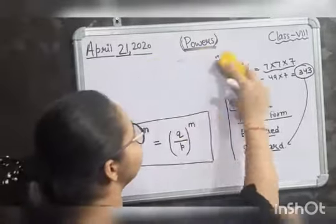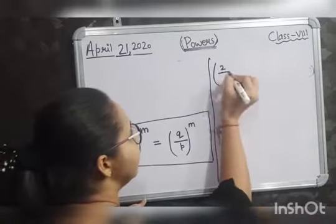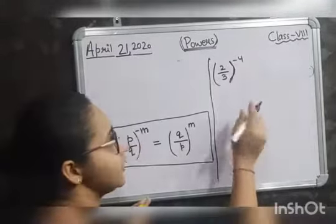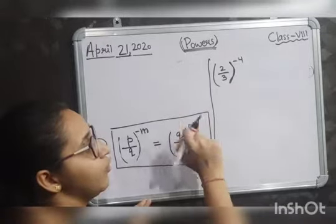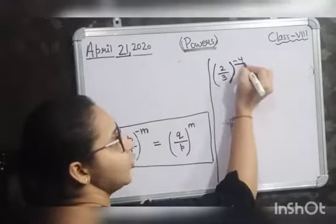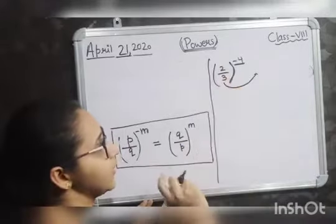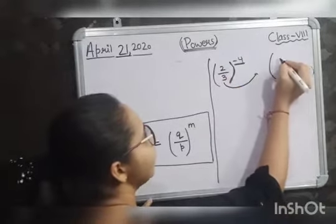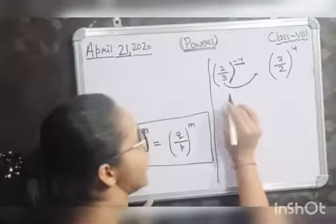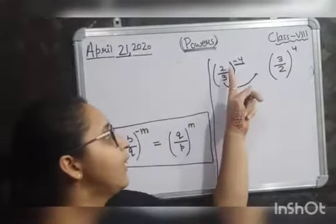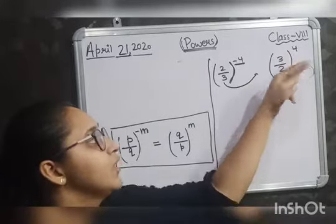For example, if you have 2 by 3 raised to the power minus 4 and the question asks you to write this in positive exponent form, you simply reverse the base. The base 2 by 3, after reversing, gives 3 by 2, and the power becomes positive. So minus 4 becomes 4, and the answer is 3 by 2 raised to the power 4.